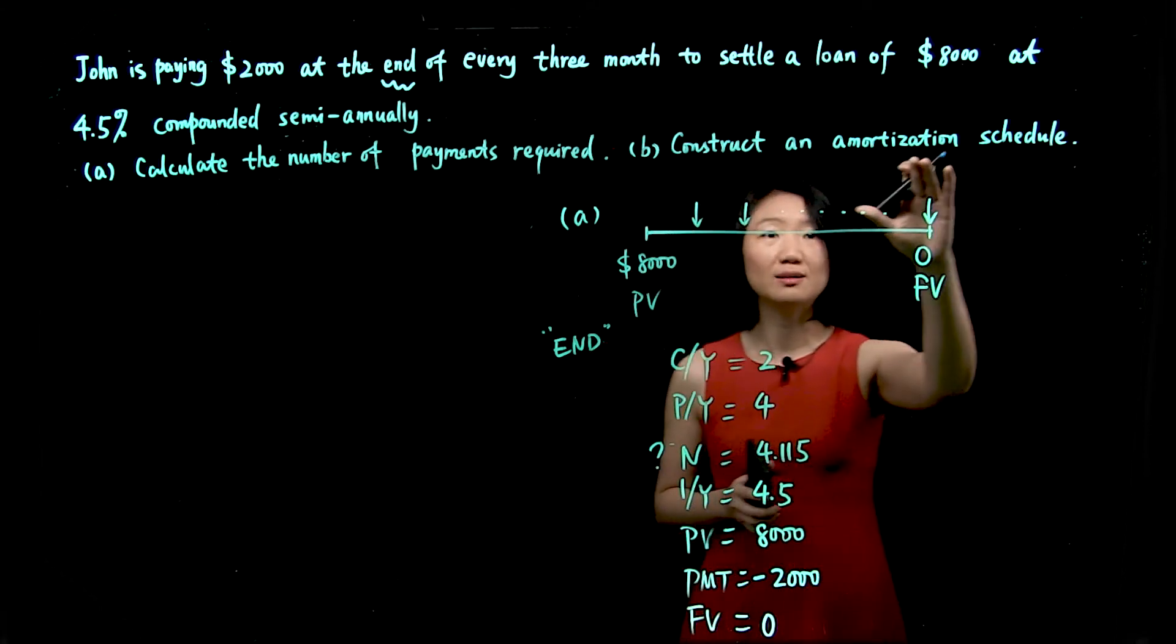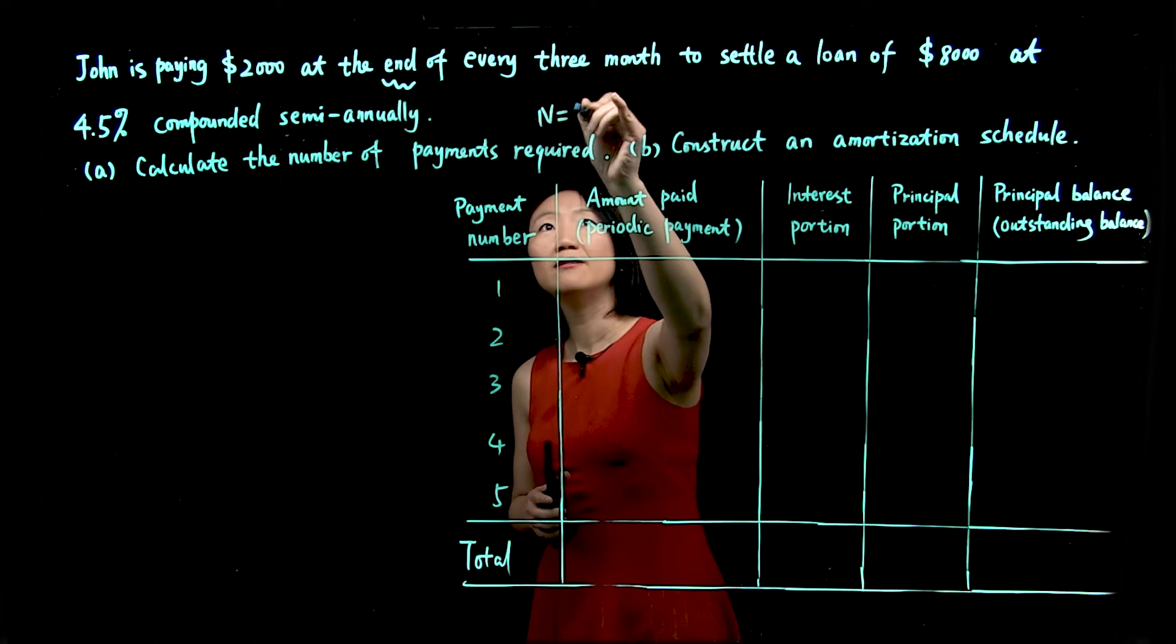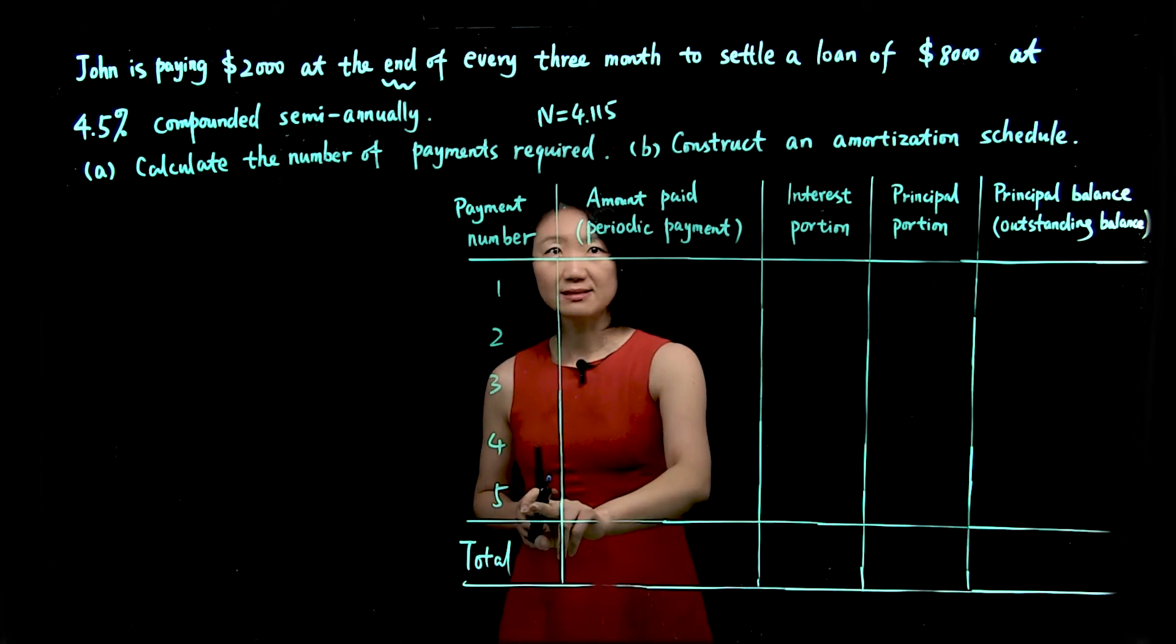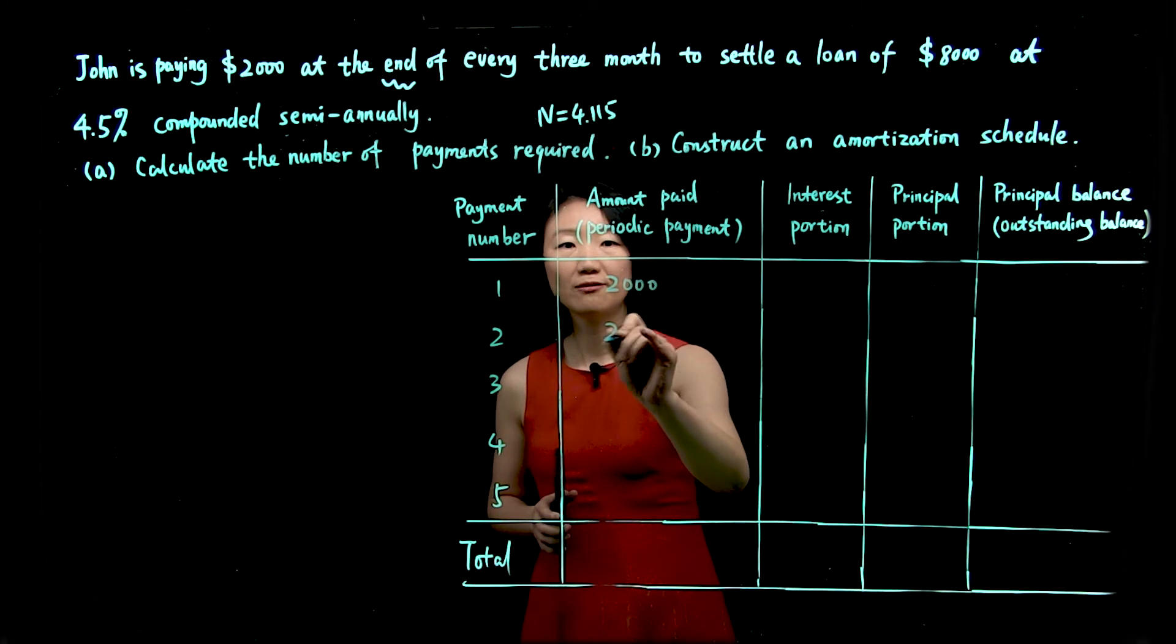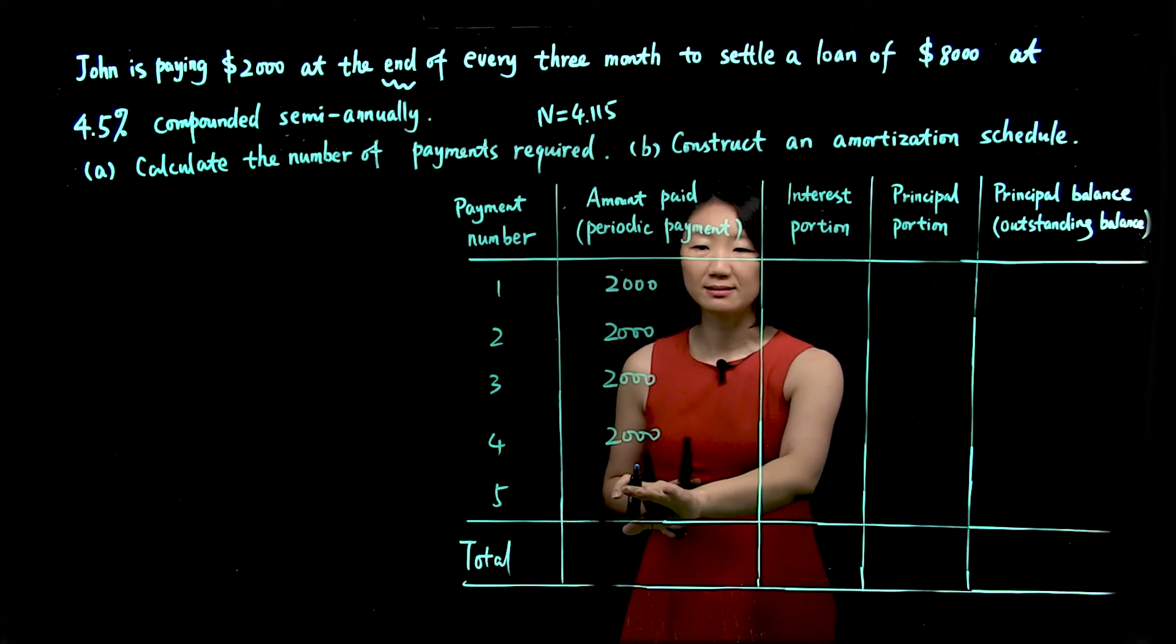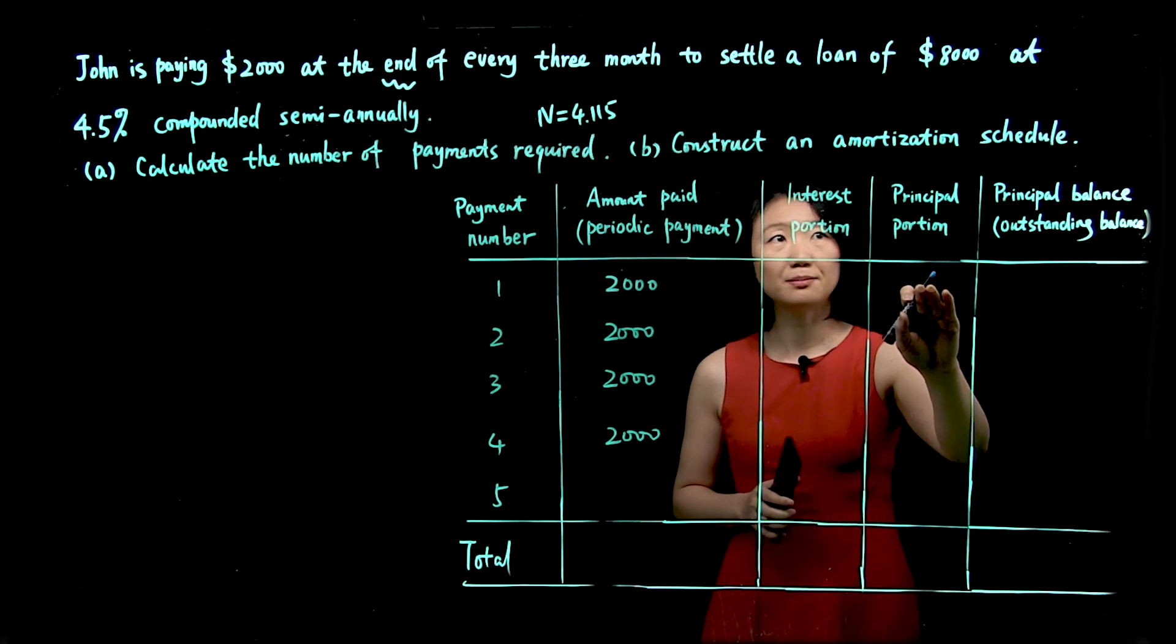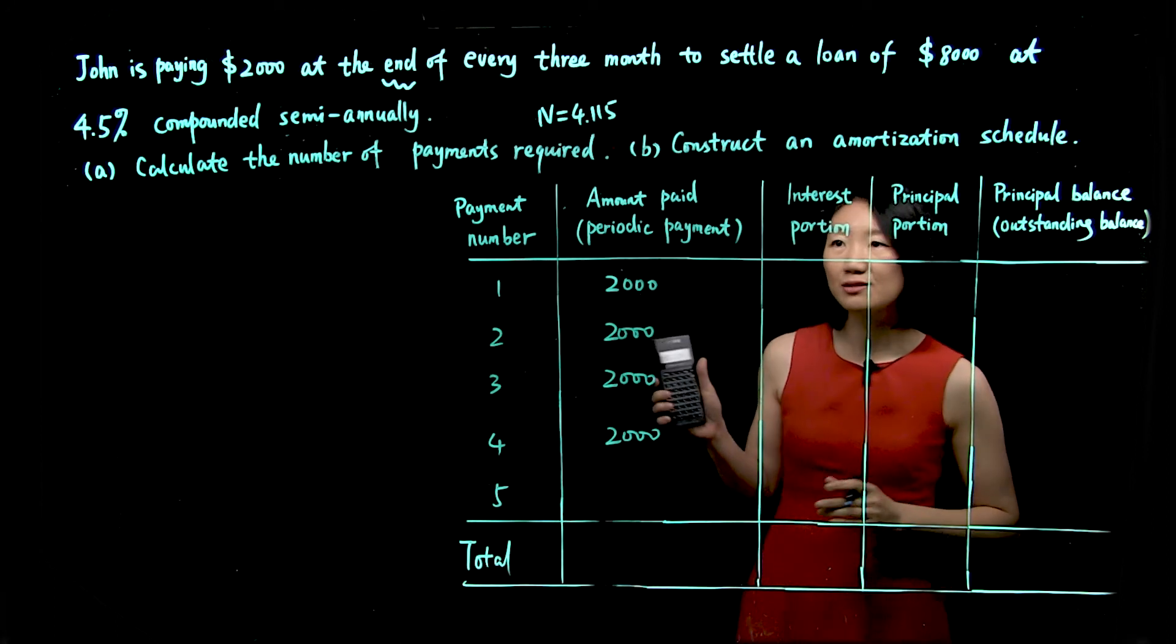Let's try to construct an amortization schedule. Now we have finished the calculation for A. We calculated number of payments required. Our N came out to be 4.115. That means four full payments and one partial payment. And this is how an amortization schedule looks like. So payment number, we have five payments. We have amount paid, periodic payments. For the first four payments, John makes $2,000 payments every time. The fifth payment will be a partial payment, less than $2,000. We don't know how much it is yet. And for each payment, we want to know how much of this payment goes into interest, how much goes into principal, and also after each payment, what is the principal balance, also called outstanding balance.